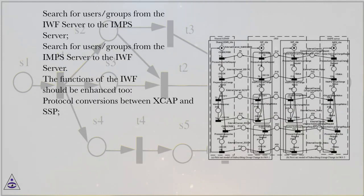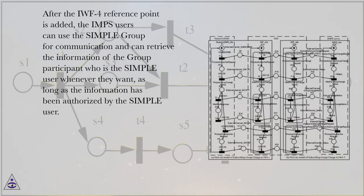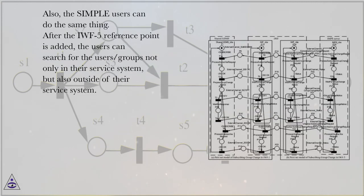Add/remove group member from the IMPS server to the IWF server. Add/remove group member from the IWF server to the IMPS server. Leave/join a group from the IMPS server to the IWF server. Leave/join a group from the IWF server to the IMPS server. Search for users/groups from the IWF server to the IMPS server. Search for users/groups from the IMPS server to the IWF server. The functions of the IWF should be enhanced too: protocol conversions between XCAP and IMPS, information mappings and information format conversions between XDM information and IMPS corresponding information, such as group information and public profile, and operation mappings between XDM service and IMPS corresponding service in the new references.